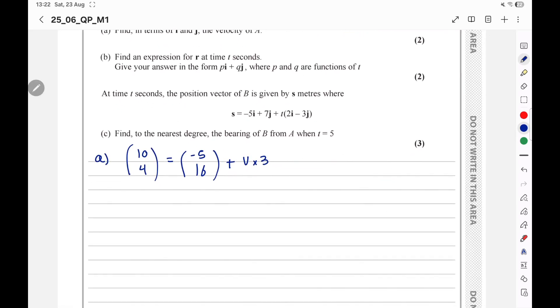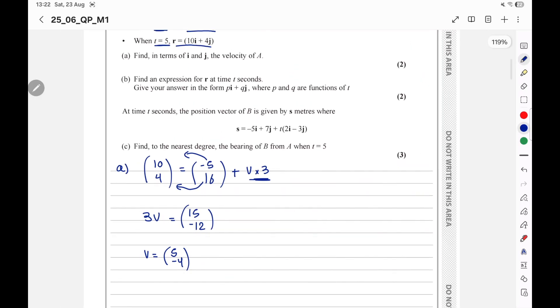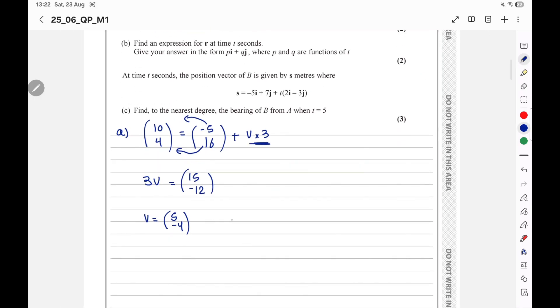Let's make V subject. 3V equal 10 plus 5 equal 15, 4 minus 16 equal negative 12. So finally, the velocity will be equal 5 and negative 4. This is the velocity. You want the velocity in terms of i and j? Write it like that. V equal 5i minus 4j. So that we don't lose any marks.